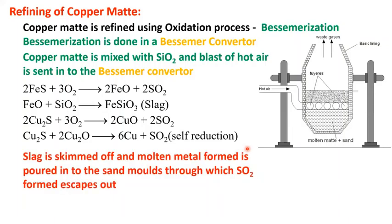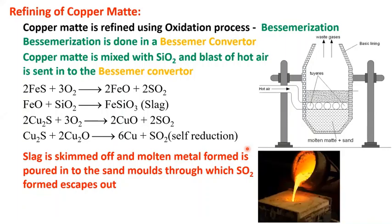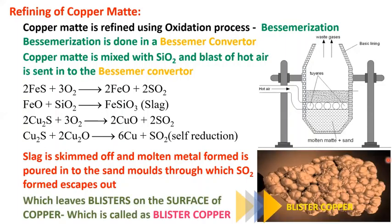In this way, copper is produced. The slag is skimmed off and the molten metal is poured into sand molds. Sulfur dioxide gas escapes through the sand molds. Any residual sulfur dioxide escapes out and leaves blisters on the surface of the copper — that is why this product is called blister copper.